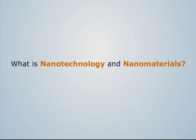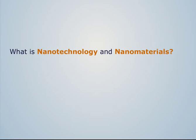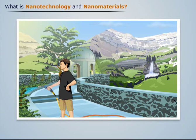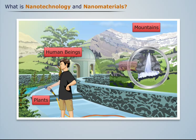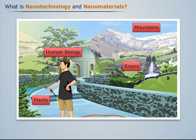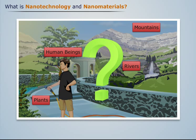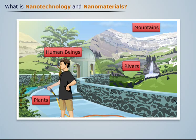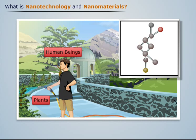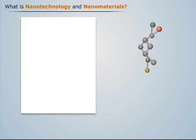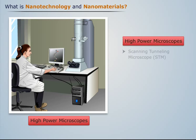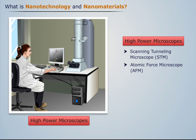What is nanotechnology and nanomaterials? A beautiful earth consists of many adorable things like human beings, plants, mountains, rivers, etc. Have you ever wondered what they are all made up of? Yes, they're all made up of atoms, which can only be seen using high power microscopes such as the scanning tunneling microscope, the atomic force microscope, etc.